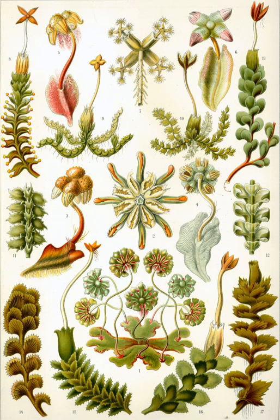As in other land plants, the female organs are known as archegonia and are protected by the thin surrounding perichaetum. Each archegonium has a slender hollow tube, the neck, down which the sperm swim to reach the egg cell.